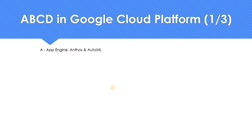A — so it's not A for Apple. It's A for App Engine, A for Anthos, A for AutoML — all the AutoML services which you have. So that's the first one. I hope it is interesting.